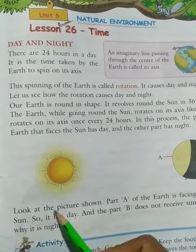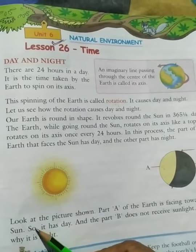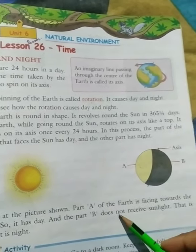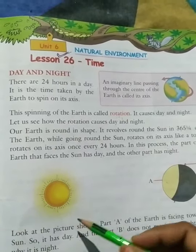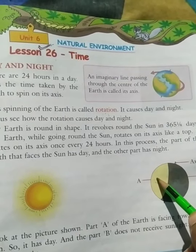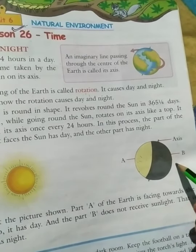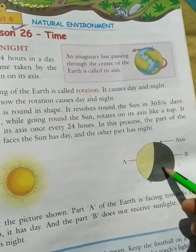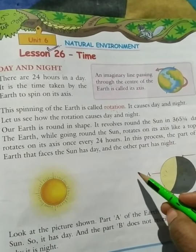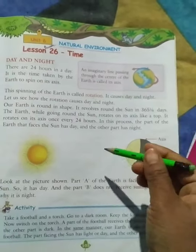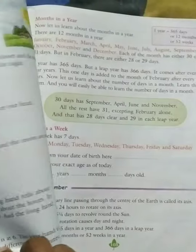Look at the picture. Part A of the earth is facing towards the sun, so it has day. And part B does not receive sunlight, that is why it has night. The part facing towards the sun has day. Today I will explain the first page and the next day I will explain the next page.